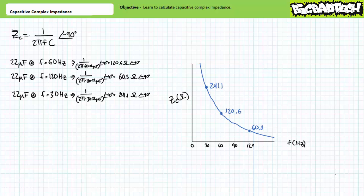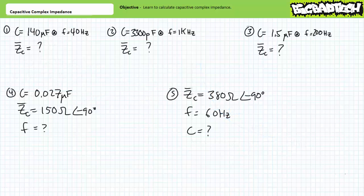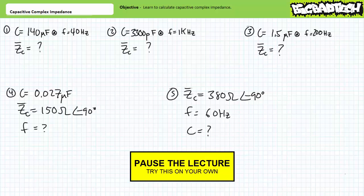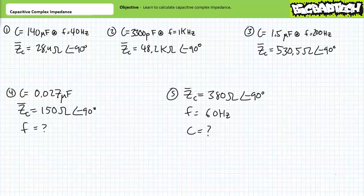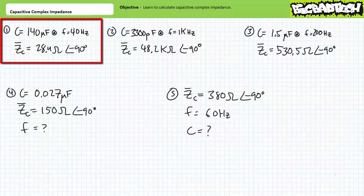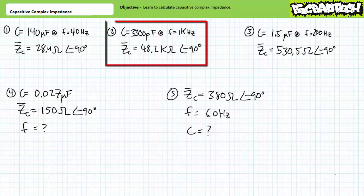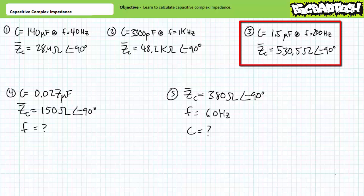The larger points will become clearer in later lectures when we examine AC Ohm's law. The intention of today's lecture is to gain some more practice with the capacitive complex impedance formula. Pause the lecture and solve for the desired quantity — some problems may require algebraic manipulation. For the first example problem, a 140 microfarad capacitor at 40 hertz presents an impedance of approximately 28.4 ohms at negative 90 degrees. A 3300 picofarad capacitor at 1 kilohertz presents approximately 48.2 kilohms at negative 90 degrees. A 1.5 microfarad capacitor at 200 hertz presents approximately 530.5 ohms at negative 90 degrees.